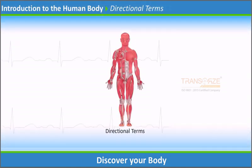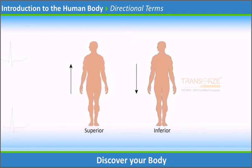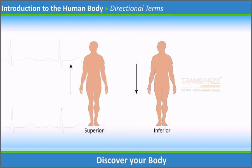Directional terms describe the positions of structures relative to other structures or locations in the body. Superior or cranial refers to the direction toward the head end of the body; for example, the hand is part of the superior extremity. Inferior or caudal refers to the direction away from the head; for example, the foot is part of the inferior extremity.